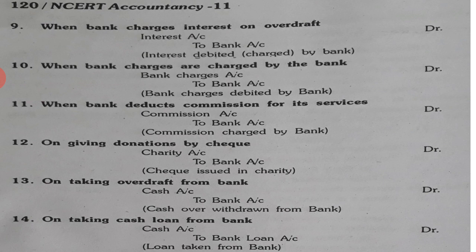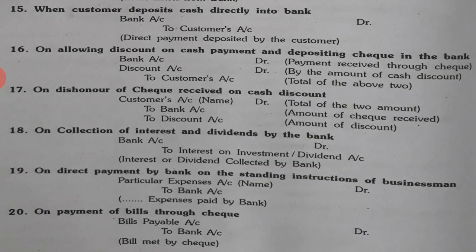11th entry: bank ne commission deduct kar liya services ke liye, to commission account debit to bank. Donation check se diya to donation account debit to bank. Bank se overdraft liya to cash account debit, bank account credit. Loan liya to cash account debit to bank loan account — what comes in is debited.